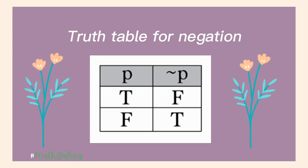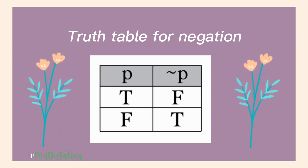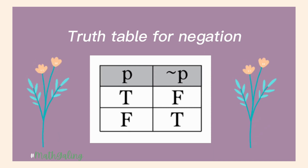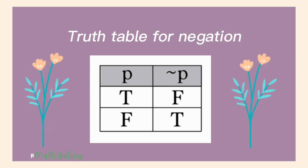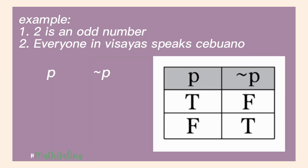Truth Table for Negation. In this table, if the given proposition is true, then not true will be false. And if the given proposition is false, not false will be true. Example 1: '2 is an odd number.' We know that this proposition is false because 2 is an even number, so the proposition is F. Therefore, not false will be true.